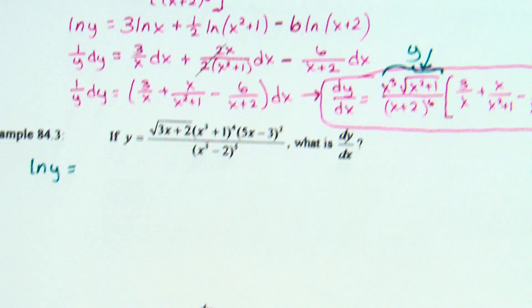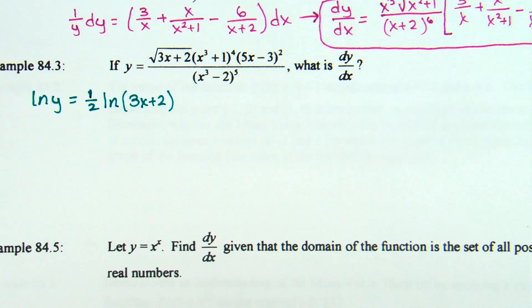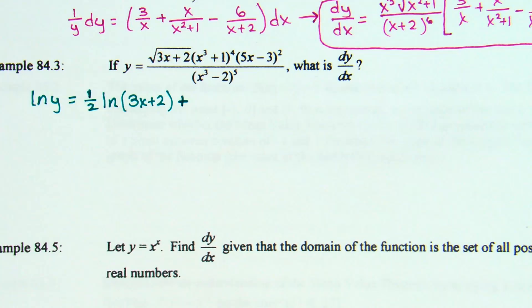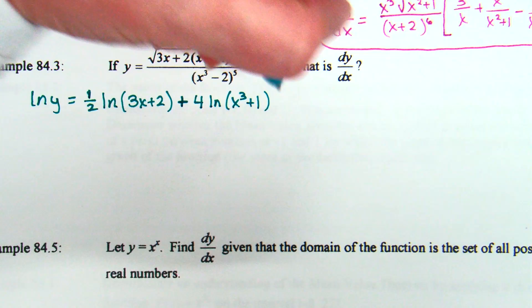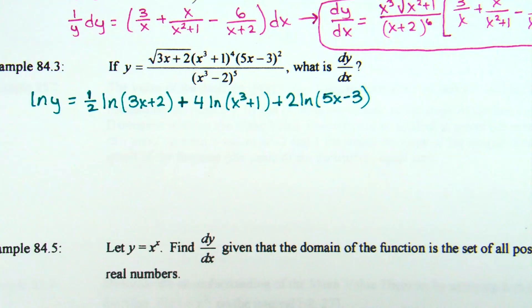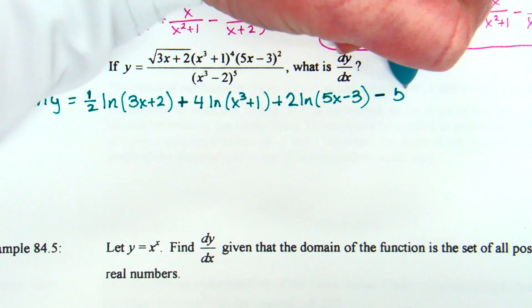For example 3, starting by breaking it up: the first factor on top is the square root of (3x + 2), which is a power of one-half, so one-half natural log of (3x + 2). Plus — pull that 4 out front — 4 natural log of (x³ + 1). Plus 2 natural log of (5x − 3) — pull the power of 2 out front. All three of those were added because they were all being multiplied. Minus 5·ln(x³ − 2) — subtracting because it's division, pulling the 5 out front.